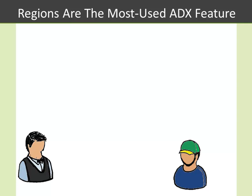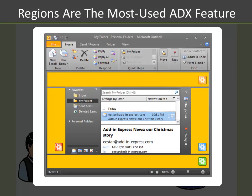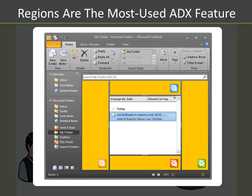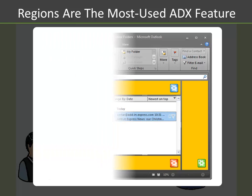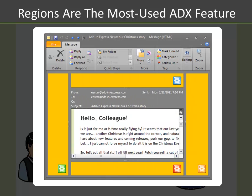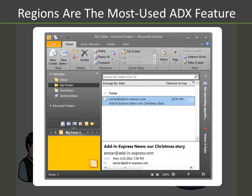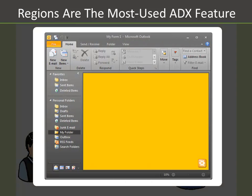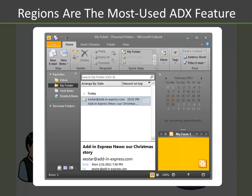Addin Express regions give you more control over where you can display your regions as compared to those introduced with Outlook 2007. Addin Express regions can be added to Task Pane docks within the Explorer window. They also can be embedded within Outlook views, displayed within the Inspector forms, within the Explorer navigation pane, and also within the Folder view and the To-Do pane.